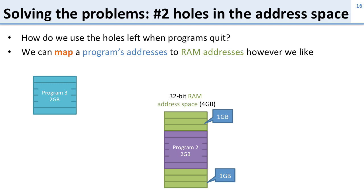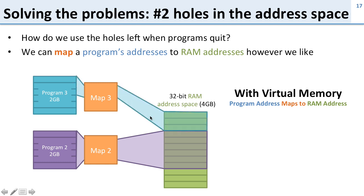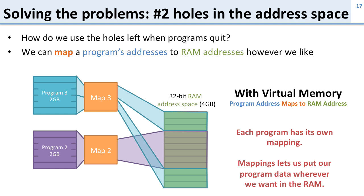Now let's take a look at how we solve problem number two — this was the holes in the address space. Remember we quit program one and it left two one-gigabyte holes, and we couldn't run program three because it didn't fit into either hole. Now we're going to have this map so we can be more flexible. Here's program three and program two — program two was mapped into the middle chunk of memory. But with virtual memory, we can map program three wherever we want. We take the first part of program three and map it up here, and the second part down here, so program three's memory is split around program two's. But it doesn't matter because this mapping allows us to map any part of program three's memory to any part of our real memory. With each program having its own mapping, we can put our data wherever we want and fill up those holes.